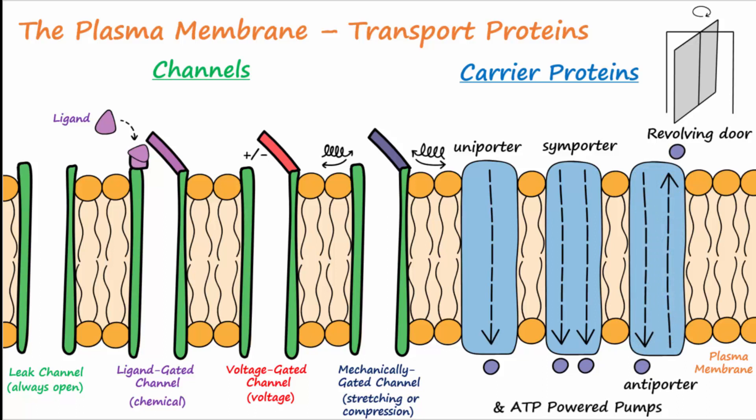It's important to remember that all the different types of channels and carrier proteins are specific for what they transport. For example, potassium leak channels will only let potassium cross through them and not sodium or anything else. Channels and carriers can also become saturated if there are too many particles to transport at any given moment.